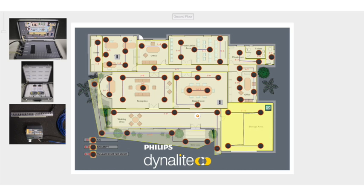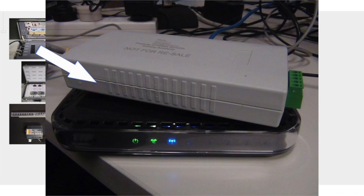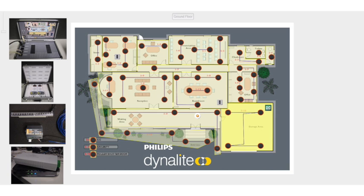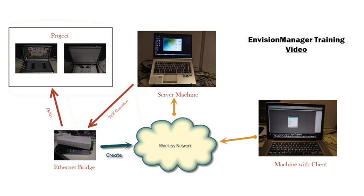The third port is connected to the dinette port on an ethernet bridge, which in turn is linked to a wireless router. The Envision Manager server is installed on a standalone machine connected to a live project via a TCP connection through the ethernet bridge.